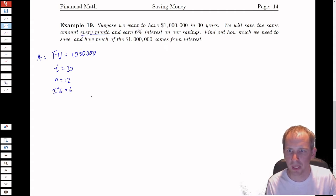Find out how much we need to save. So we want to find the payment amount, or the deposit amount. And then also find out how much of our million dollars comes from interest.